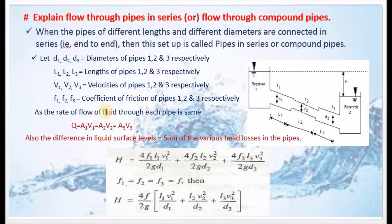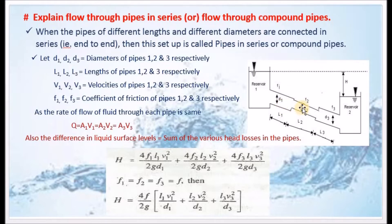As the rate of flow of fluid through each pipe is the same, we apply the Continuity Equation. Q is equal to A1V1, which is equal to A2V2, which is equal to A3V3.